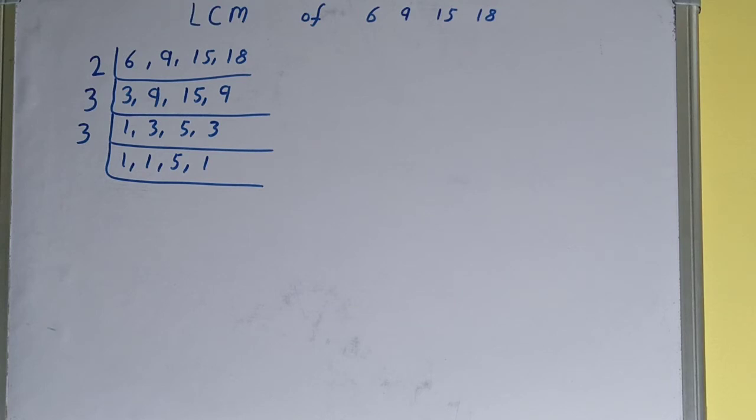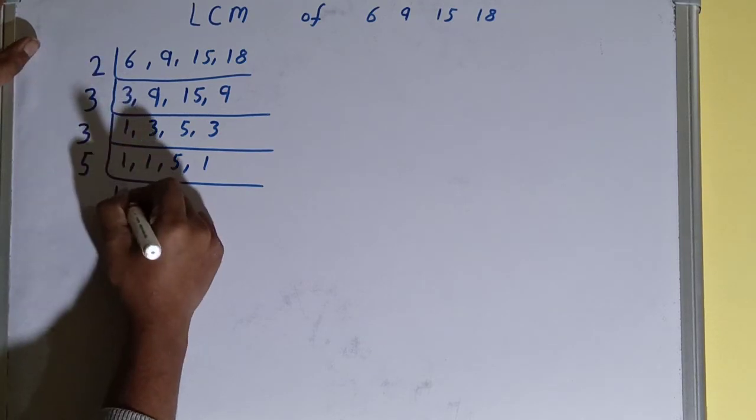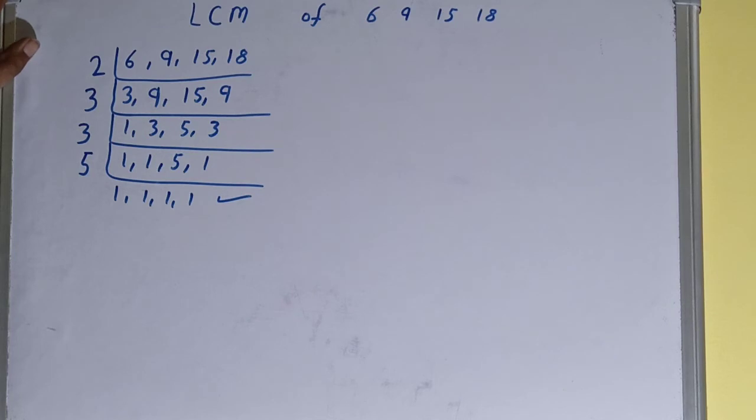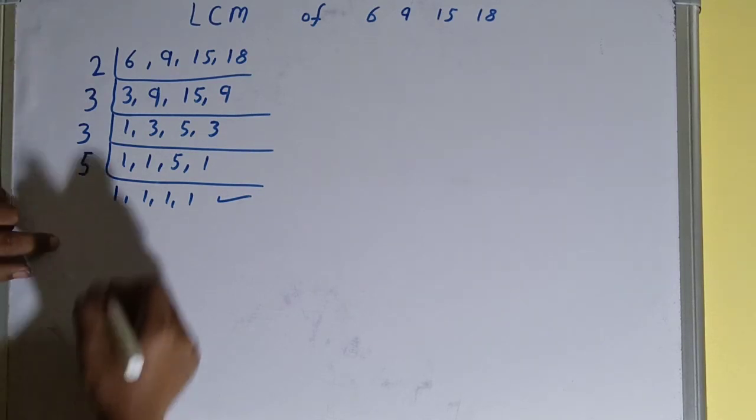That is 5. Is any number divisible by 5? This number is divisible, so we'll divide and we'll have all the numbers as 1. Once we get all 1s, we need to stop and do one last thing.